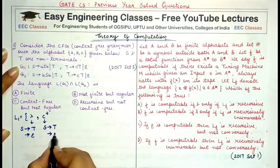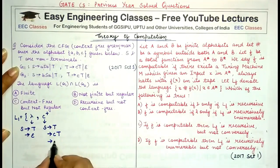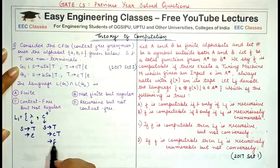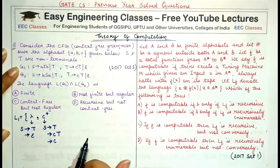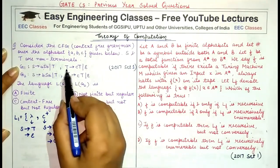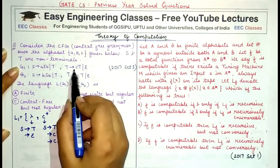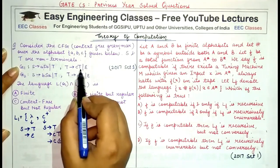I replace T with CT and if I want to terminate string generation I would replace T by lambda again, giving a single C. Or I can replace this T with another CT, because the only options are replacing T with epsilon or replacing T with CT.